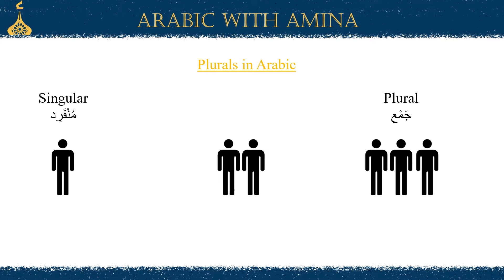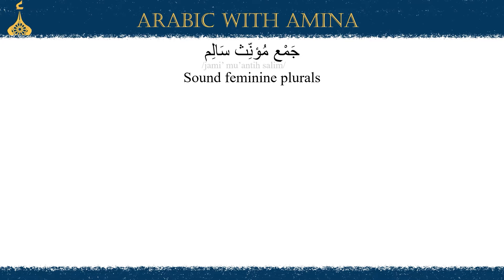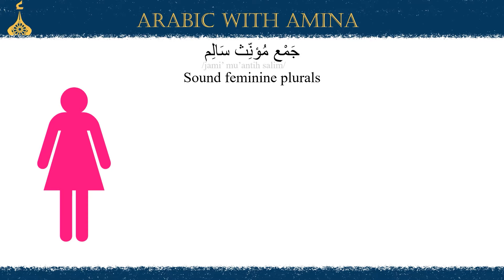First off, we're going to start by talking about jama' mu'annath salim, or the sound feminine plurals. As mentioned, this applies to feminine words. Jama' mu'annath salim is quite straightforward — we have a rule which we're going to apply to our words. We're talking about nouns, and this noun is feminine. The rule is that we add to the end of the word alif ta, or 'at', and that makes our noun plural. It's quite simple and straightforward.